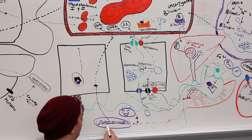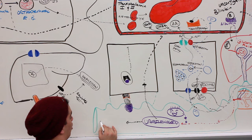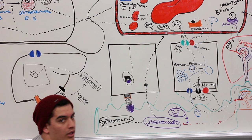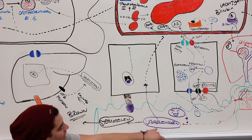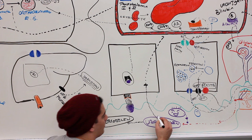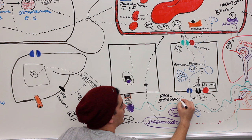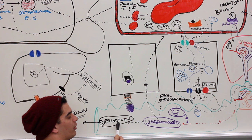Some of the urobilinogen will continue to get broken down in the intestines into another chemical called stercobilin — and this is what makes your feces brown. So stercobilin causes the brown pigmentation within the feces. Another name for urobilinogen in the GI tract is fecal stercobilinogen. When fecal stercobilinogen continues to get broken down, it produces stercobilin, which produces the brown pigmentation.